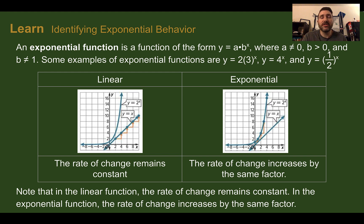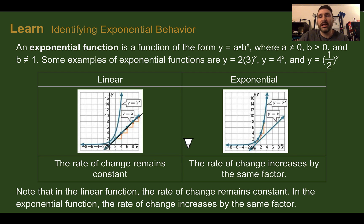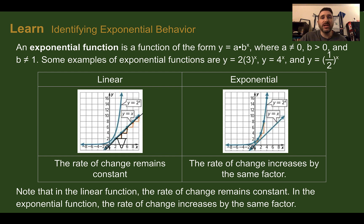We can see two pictures that depict linear and exponential behavior. In the first, on the left, we have a linear graph with a straight line. Linear functions, as we saw back in Module 4 and Module 5, are straight lines with a constant rate of change. Every time this function goes over two, it also went up two — the same rate of change every time. Linear functions add or subtract the same amount each time.